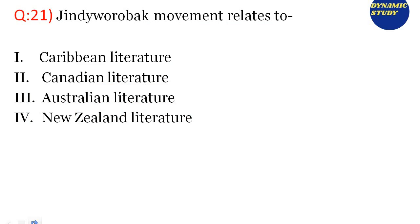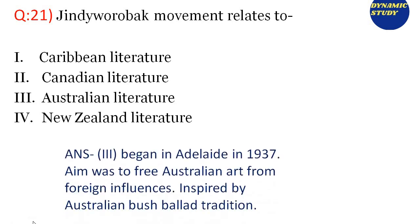Question 21: The Jindyworobak movement relates to which literature? Option 1: Caribbean literature. Option 2: Canadian literature. Option 3: Australian literature. Option 4: New Zealand literature. The right answer is option number 3, Australian literature. The Jindyworobak movement first started in Adelaide, Australia, in 1937, and the aim of this movement was to free the Australian art from foreign influences.